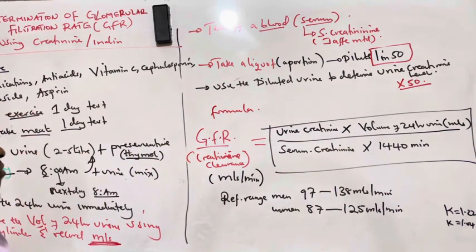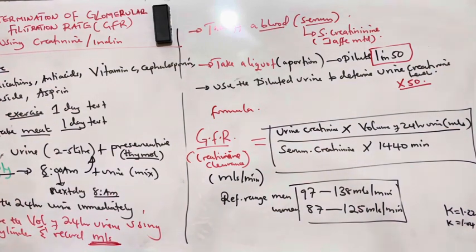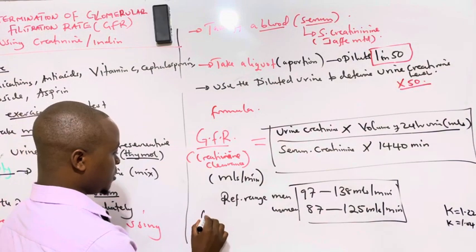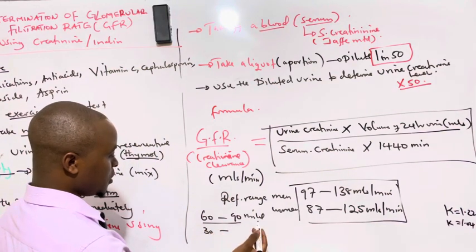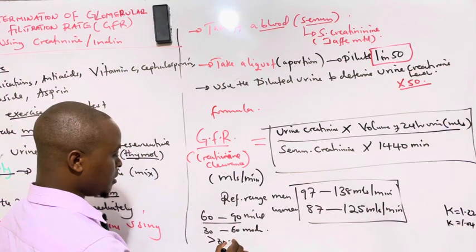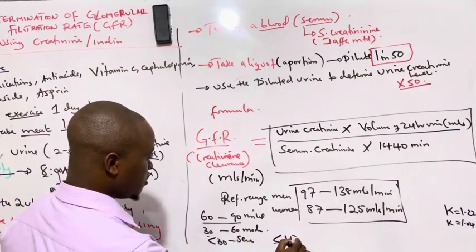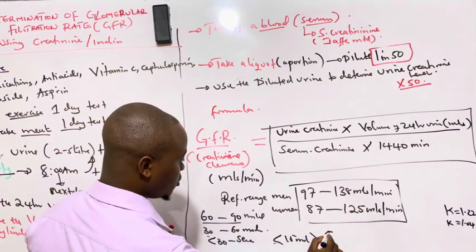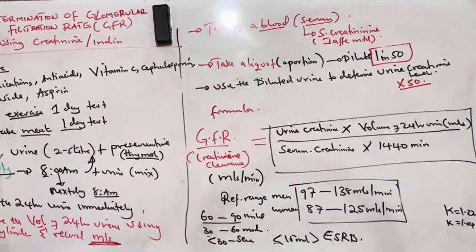We use GFR to determine severity of kidney disease. When GFR is within the normal range, the kidney is functioning normally with no worries. When GFR drops to 60–90 mls per minute, this is mild renal failure. Between 30–60 is moderate. Below 30 mls per minute is severe. And when it goes below 15 mls per minute, that is what we call end-stage renal failure or end-stage renal disease.